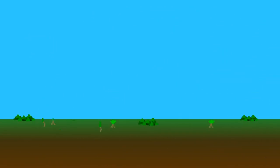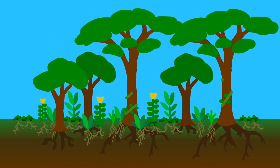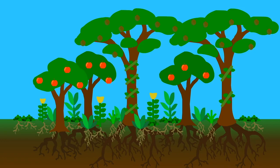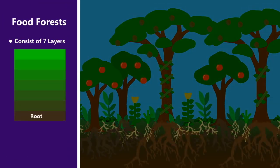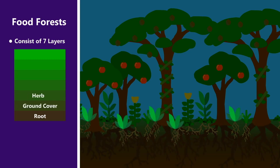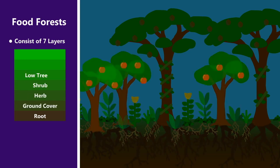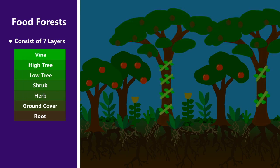And then recreating these relationships in a way that's just as ecologically resilient, but produces more food. Food forests are often thought of as comprising seven layers: the root layer, the ground cover layer, the herb layer, the shrub layer, the low tree layer, the high tree layer, and the vine layer.